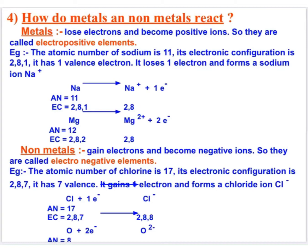So they are known as electropositive elements. Consider sodium — sodium is the metal having atomic number 11 and its electronic configuration is 2, 8, 1. It has one valence electron, so in order to acquire octet configuration it will lose this electron and form the positive ion Na⁺. You can see in the equation: Na having electronic configuration 2,8,1 forms Na⁺ ion with electronic configuration 2,8, and one electron is released.